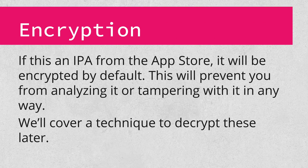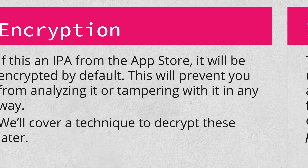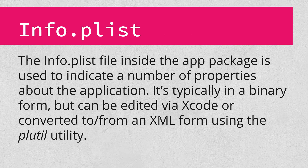One important thing to keep in mind is that binaries and IPAs from the App Store will, by default, be encrypted. Without decrypting this, it's not possible to disassemble, decompile, or otherwise mess with the binary. We'll talk about how you can decrypt these apps a little bit later in the session. Finally, the info.plist file in the root of the IPA contains a huge number of properties about the application — from the application name and version to the URL schemes it registers. Most of this has no bearing on security or testing, but there are a few notable exceptions covered later in the session.